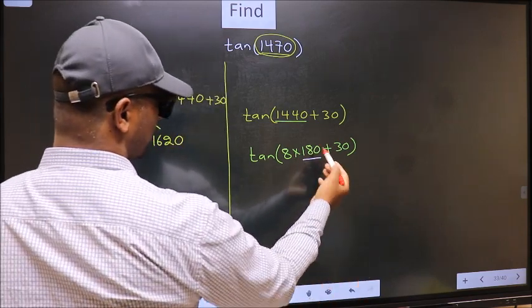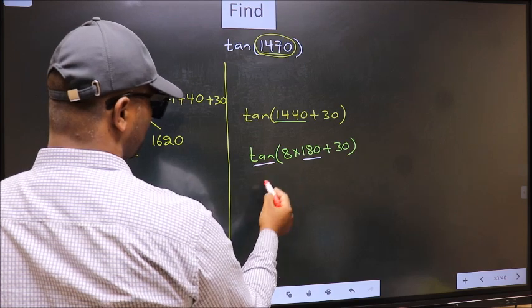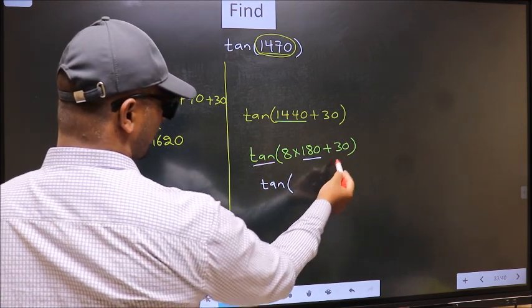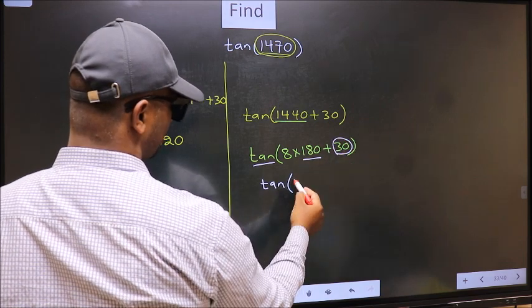Next, here we have 180. So tan is not going to change. It will remain tan. And inside, we get this angle, 30.